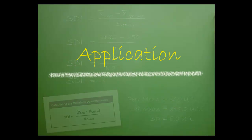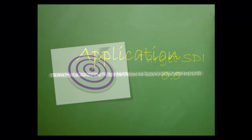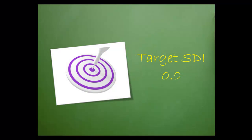Now that you know how to calculate an SDI, let's talk about application. The target SDI is zero. Zero indicates a perfect comparison to the peer group.